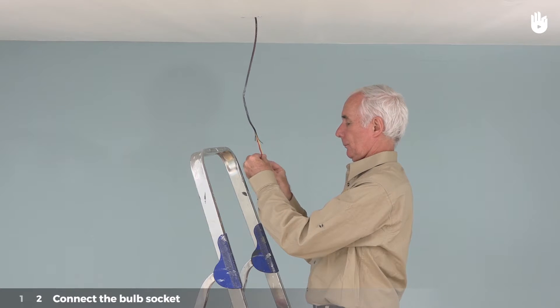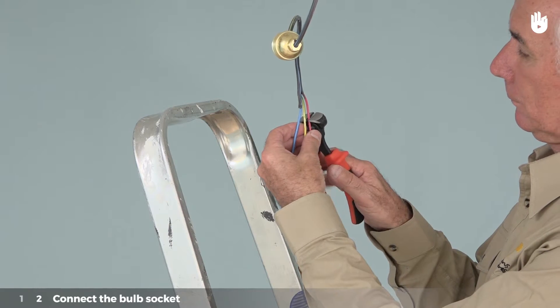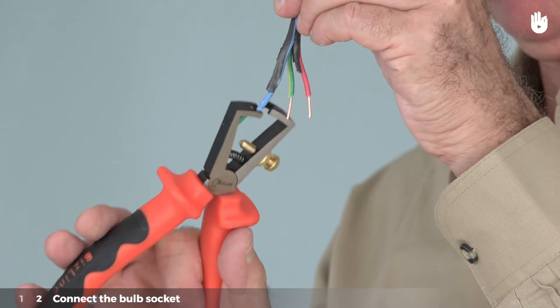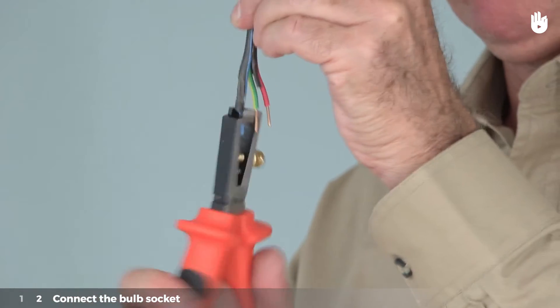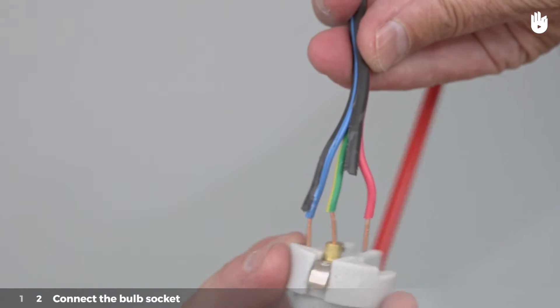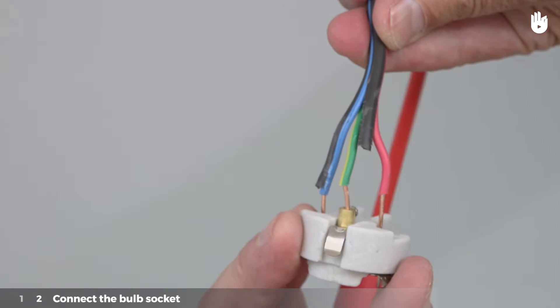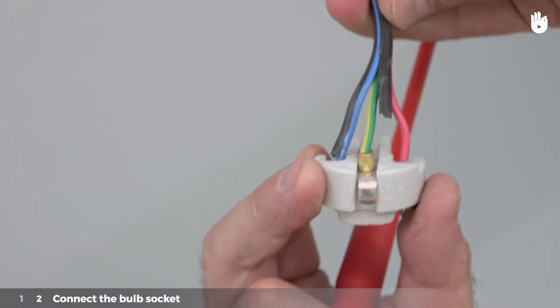Place the base of the bulb socket on the cable. Cut any excess away from the conductors. Strip the plastic off the ends of the electrical wires. Place the stripped end of the green and yellow conductor into the middle terminal and the two other conductors to the right and left.